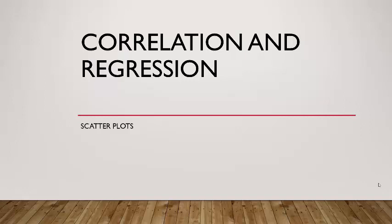In this lecture we want to begin our study of correlation and regression. The main concept is that we want to study the relationship between two variables — for example, the relationship between a house's square footage and its sale price. We want to put a numerical measure to that relationship, which is correlation, and then model it with a mathematical equation, which is regression.